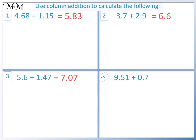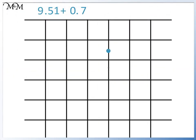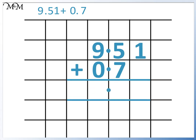Question 4: 9.51 plus 0.7. We begin by writing a zero in the hundredths column of 0.7. 1 plus 0 equals 1. 5 plus 7 equals 12. 9 plus 1 equals 10. We have just 1 in the tens column. The answer is 10.21.